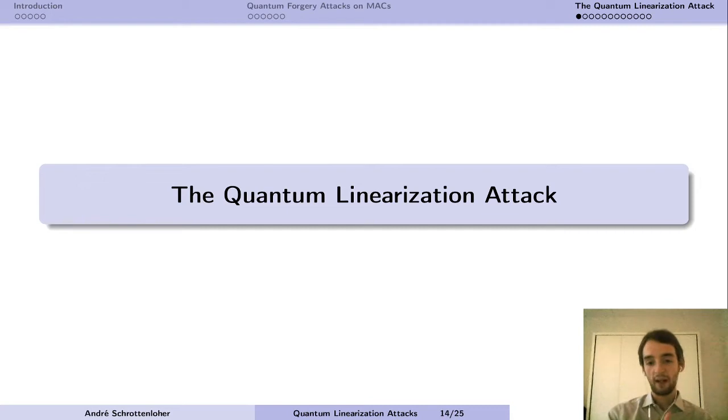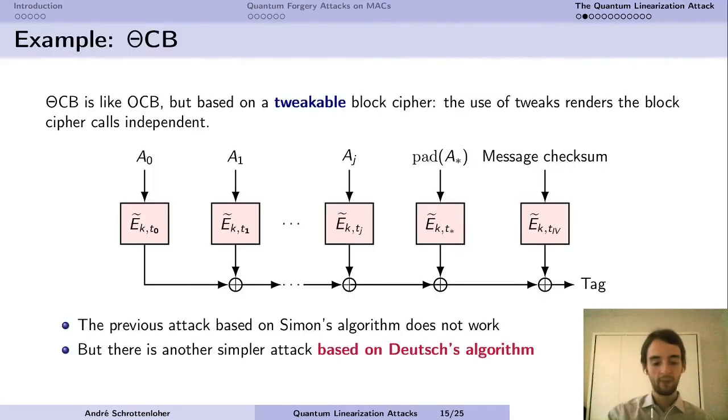Which brings us to the idea of our new attack. And to see how it happens, we're going to start by trying to avoid the attack that was just presented on OCB. Let's remove the offsets to make life difficult for the quantum adversary. And this would bring us to θCB, which is an abstraction of OCB, in which instead of having offsets and block cipher calls, you have a tweakable block cipher instead. This tweakable block cipher is just a family of block ciphers indexed by the tweak. They make all these block ciphers independent. And now you don't have a XOR with the offset anymore, and so you don't have the nice periodicity property that we observed. The previous attack doesn't work.